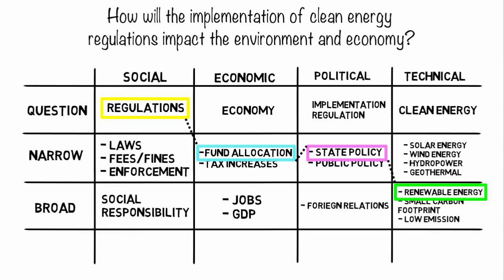If you search something and it's too specific with too few results, switch one of your search terms with a word from the broad row, and vice versa. If the search is still too narrow or too broad, you can change another keyword accordingly.